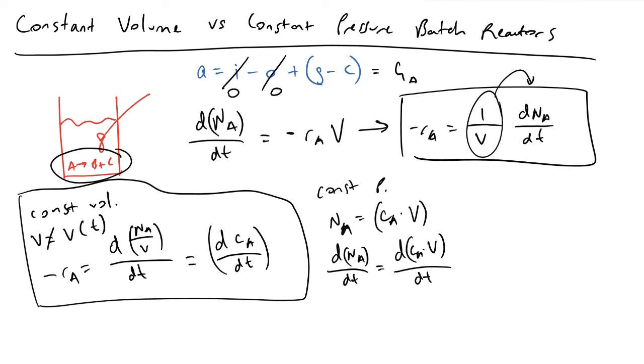And because volume is changing, what we have to do here is the product rule. And this means that this term is now equivalent to the first times the derivative of the second plus second times the derivative of the first. And so what we get out of it is this: dnA/dt is really equal to cA times dV/dt plus V times dcA/dt.